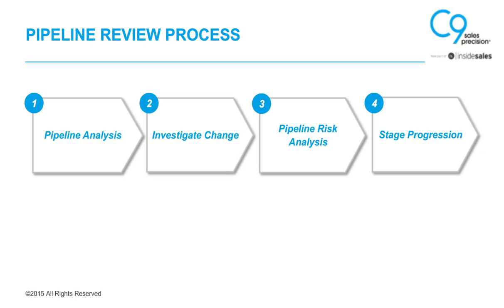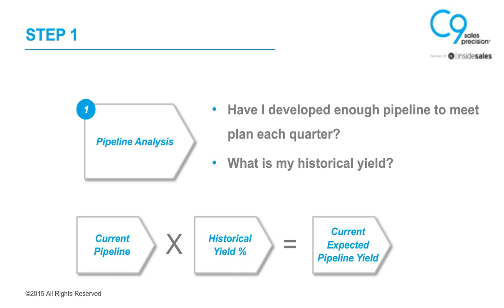A large portion of our work is really trying to get a clear understanding of the channels to determine if they've developed enough pipeline both this quarter and next quarter to meet their plan. It has become simple for us — we can look at the pipeline any day, any month, any quarter, and based on simple calculations and historical performance, we can predict future outcomes. This has really helped us move the needle at Pitney Bowes, making sure we understand exactly how each business is tracking to plan.